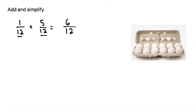So 1/12 means 1 out of 12. So here we have 12 eggs, so 1 out of 12 would be represented by just 1 egg. If we take 1 egg and we add that to 5 out of 12, so 5 out of 12 would be represented by 1, 2, 3, 4, 5.